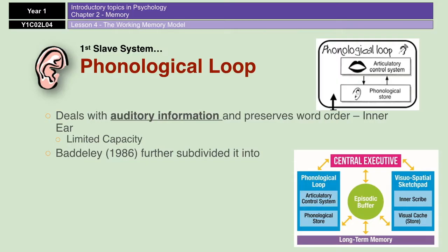Baddeley further subdivided the phonological loop into two more stores: the phonological store, which holds words that have been heard for one to two seconds, and the articulatory process, which holds words that have been heard from the store or seen, and silently repeats those words over and over again like an inner voice, for as long as they are needed.